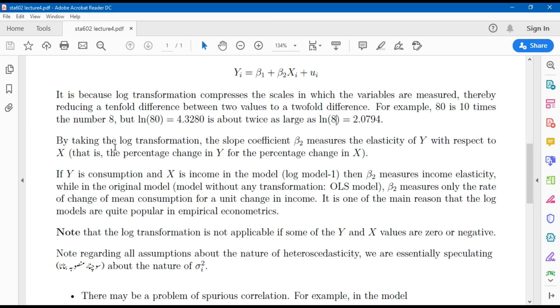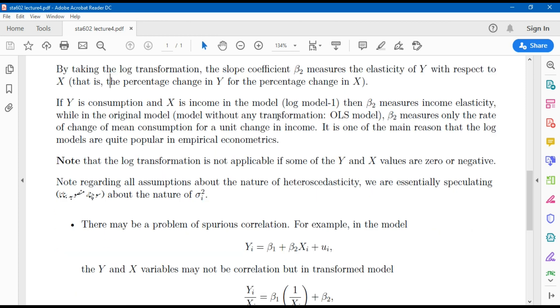One should note that taking the log transformation, the slope coefficient beta 2 will measure the elasticity of Y with respect to X, and the elasticity represents the percentage change in Y for the percentage change in X. If we consider Y as consumption and X as income, then beta 2 measures the income elasticity.